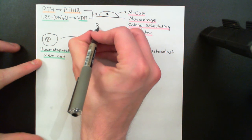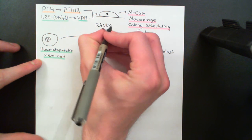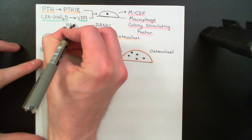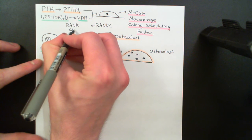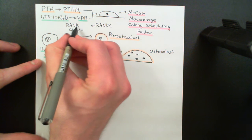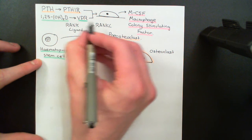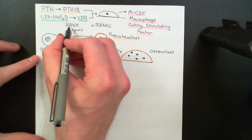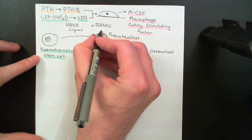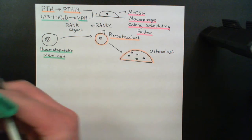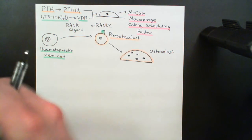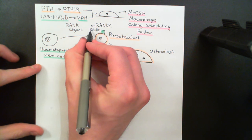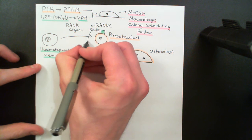Pre-osteoclasts need to be stimulated with something known as RANKL, or RANK Ligand. RANK is a receptor on the surface of the pre-osteoclasts. RANK stands for Receptor Activator of Nuclear Factor kappa B — NF-kappa B. So R is for receptor, A is for activator, and NK is for nuclear factor kappa B.